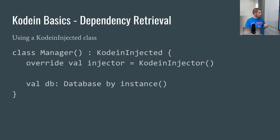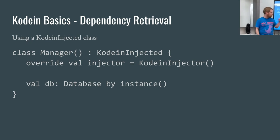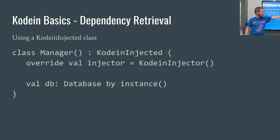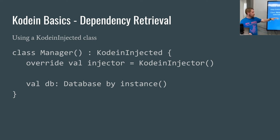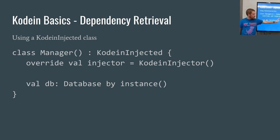For dependency retrieval, you need to build out how Kodein is going to be accessed. Kodein provides a few different ways to access the Kodein object. KodeinInjected is one — it makes you implement this injector, but you can do some customization. Out of the box, this is the simple let's-just-get-started approach. All you have to do is instantiate the class manager, and then you can start getting your bindings. By using the 'by' keyword, this is a lazy instantiation — either immediately or sometime later, this will actually get bound.